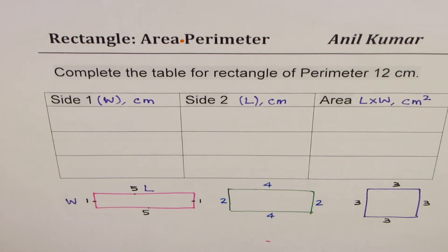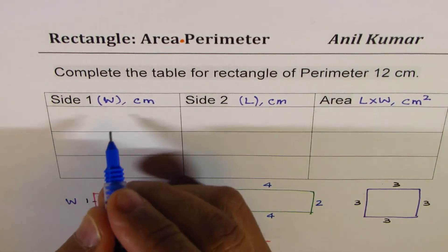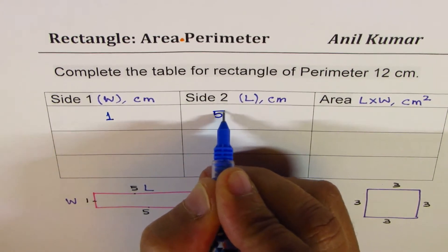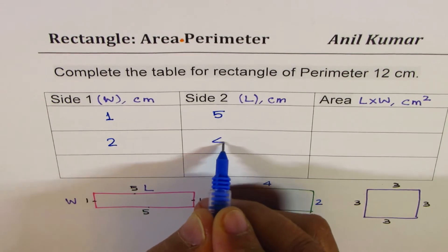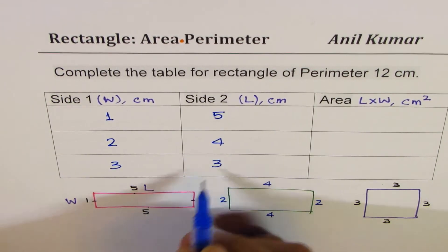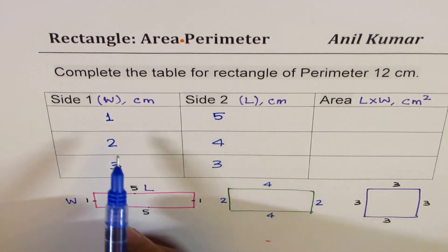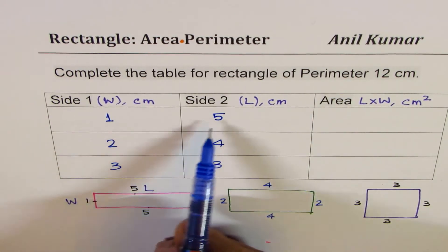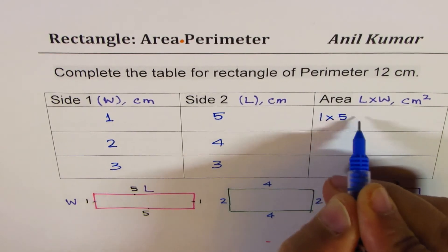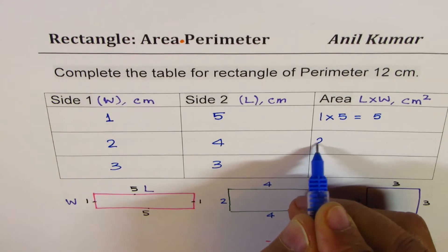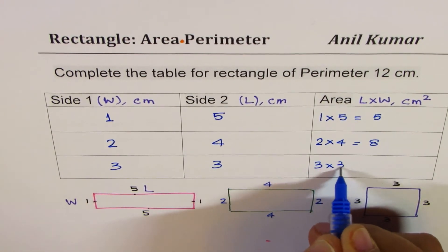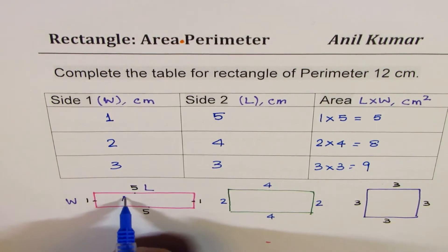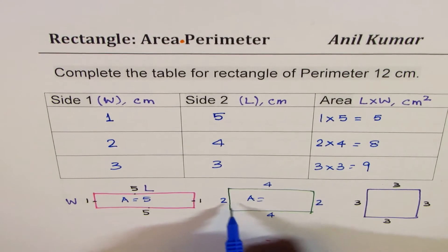Now you can fill up the table. The combinations are: 1 and 5, 2 and 4, and 3 and 3 — these are the only possible combinations to get a perimeter of 12. To get the area, multiply the sides: 1 times 5 equals 5 centimeters squared, 2 times 4 equals 8 centimeters squared, and 3 times 3 equals 9 centimeters squared.